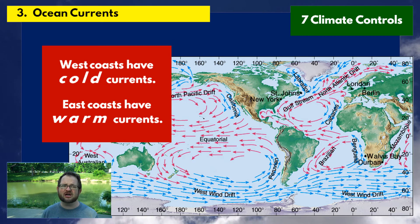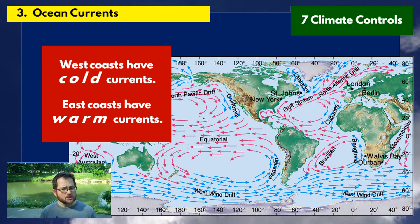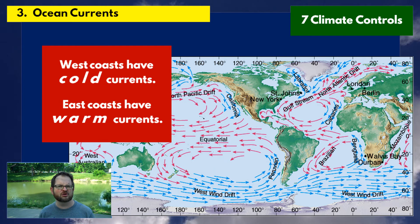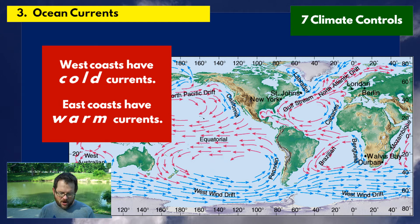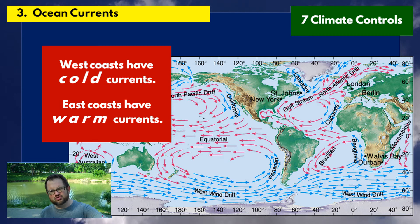Our third climate control is ocean currents. Two locations can be at the same latitude and both on the coast, but their climates will depend on the ocean currents around them. All of the world's oceans rotate in large circulations called gyres. All the west coasts of continents have relatively cold ocean currents, and all the east coasts of continents have relatively warm currents — controlled by the subtropical highs sitting on top of each ocean.